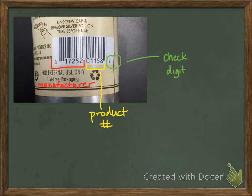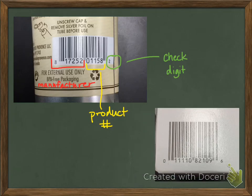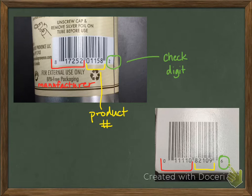Here's another example of a barcode, this one off a Kleenex box — it's the Kroger brand. Same structure: the first six digits would be Kroger, the next five would be this type of Kleenex, and this last digit is our check digit.